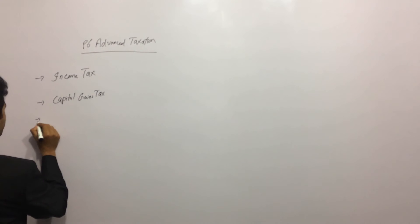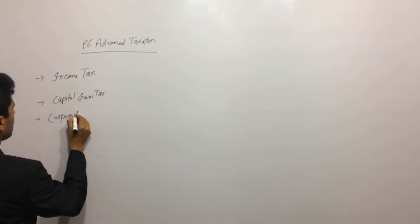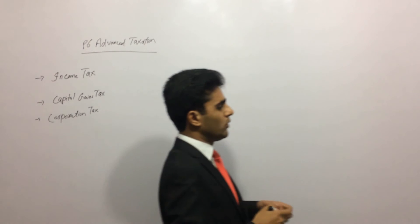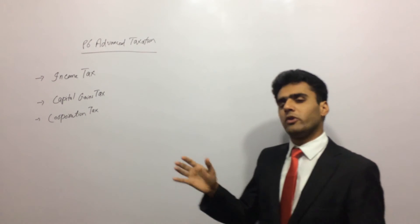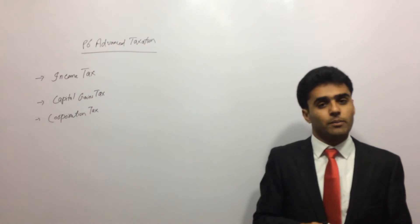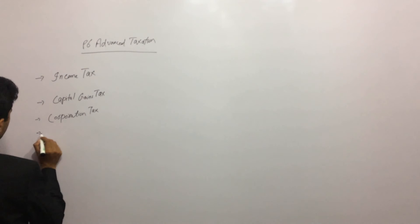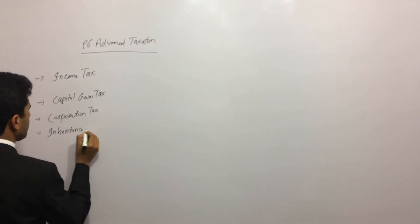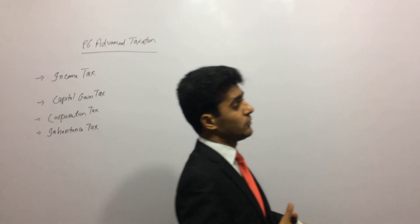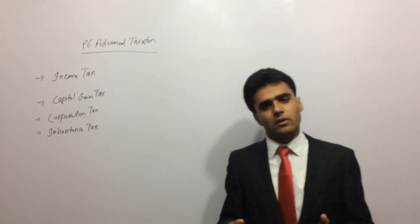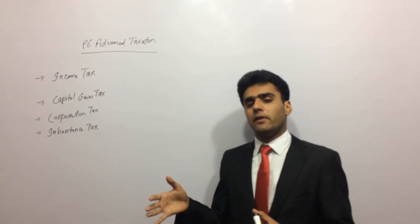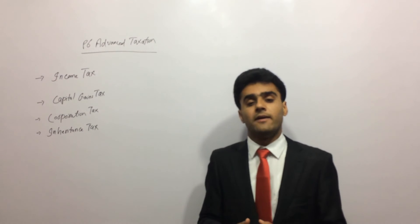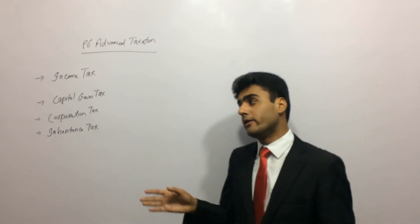The third section is corporation tax — the tax that companies pay. If you register your business as a company, your company will have to pay corporation tax. The fourth section is inheritance tax. As the name suggests, when someone dies and their assets are inherited by others — say a wealthy person's children inherit their estate and assets — the inheritors must pay tax on what they receive, and that is called inheritance tax.